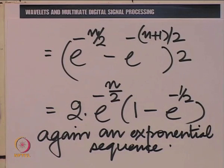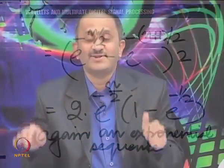This further illustrates the idea that when we project the exponential function on any of these subspaces Vₘ in the Haar multi-resolution analysis, we get an exponential sequence. So exponentials replicate themselves in discretization.